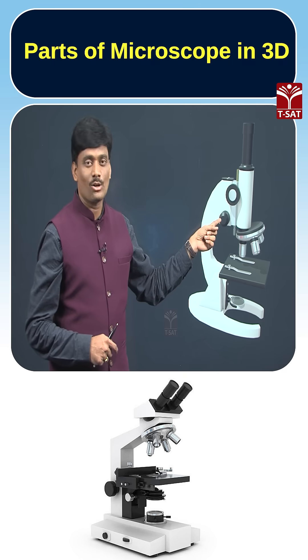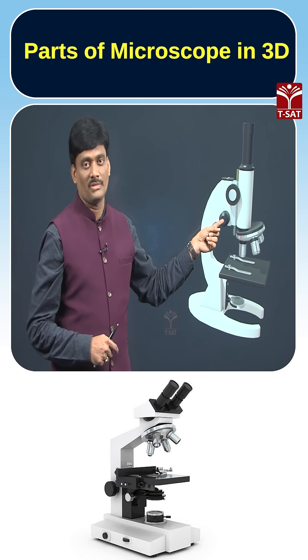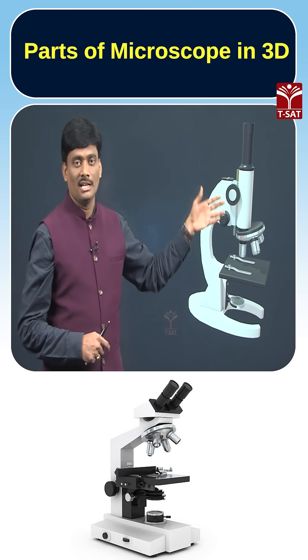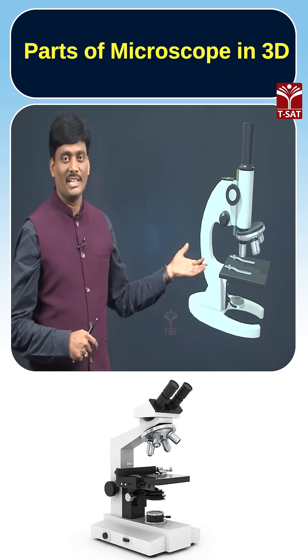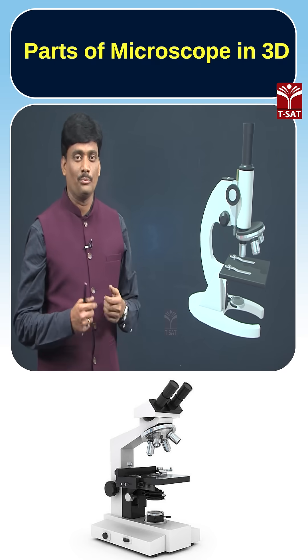The lower one is called the fine adjustment knob. These are the major parts present in a microscope.